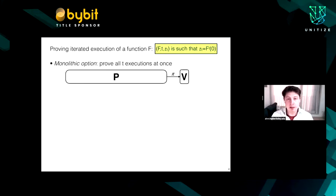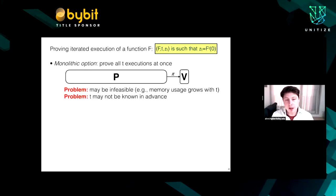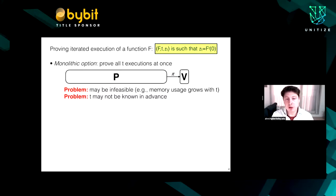One way to prove that is something we could call the monolithic option: you invoke a SNARK to prove all T executions at once. Now this can be done, however it has some drawbacks. First, this may actually be infeasible — the memory consumption of prover algorithms in many SNARK constructions grows linearly with T. So for sufficiently large T, there just won't exist a machine able to prove it, even if you're willing to wait long enough.